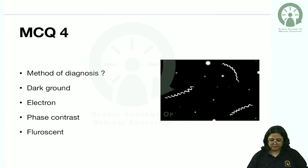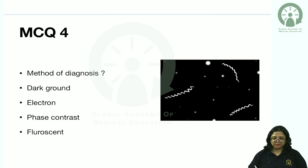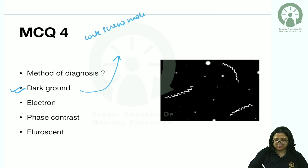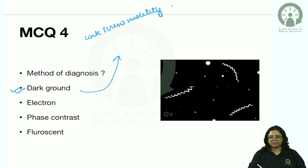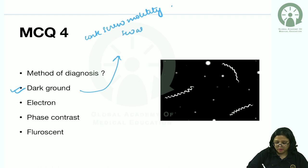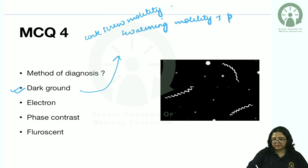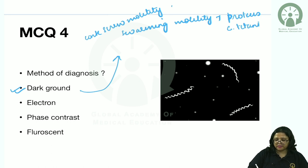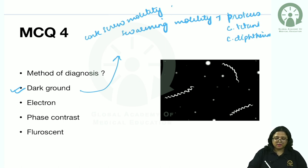Treponema pallidum seen in dark ground microscope shows spiral form with corkscrew motility. Swarming motility is seen on blood agar by Proteus species (P. vulgaris and P. mirabilis) and also by Clostridium tetani and Corynebacterium diphtheriae.